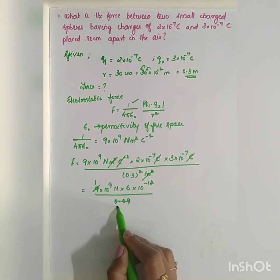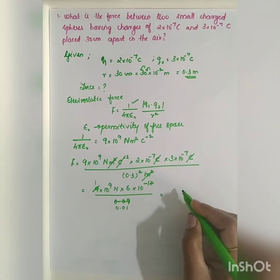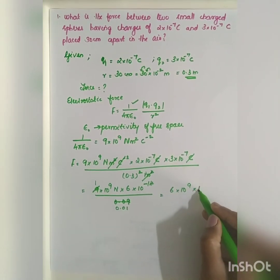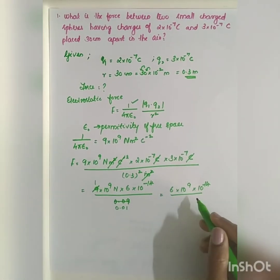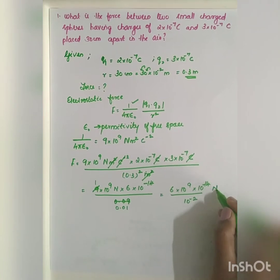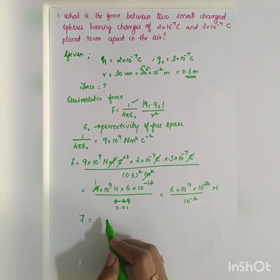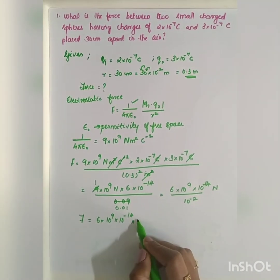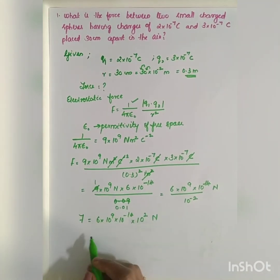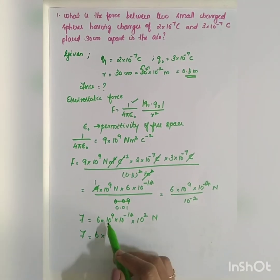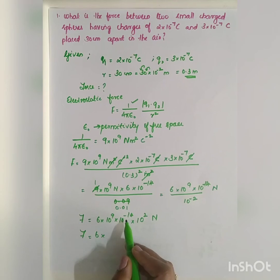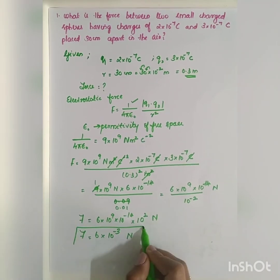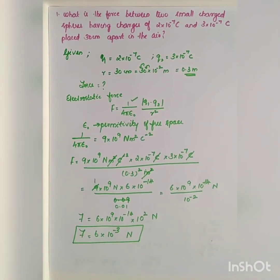Now simplifying: 9 cancels with 0.09 (9/0.09 = 100), giving 6×10⁹ × 10⁻¹⁴ × 10² newton. Combining the powers of 10: 9 + 2 = 11, and 11 − 14 = −3. Therefore, F = 6×10⁻³ newton. That is the final answer.